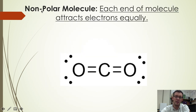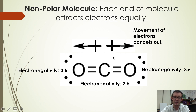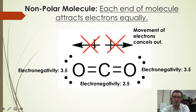Now the opposite of a polar molecule is a nonpolar molecule, where each end of the molecule attracts electrons equally. So for instance, in carbon dioxide, each oxygen atom at the ends of the molecule has an electronegativity of 3.5, whereas the carbon at the center has an electronegativity of 2.5. As a result, these oxygens attract the shared electrons toward themselves equally, and the movement of these electrons cancels out — each end is attracting the electrons equally.